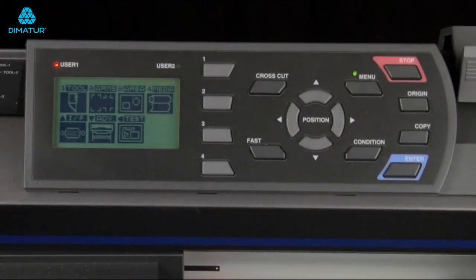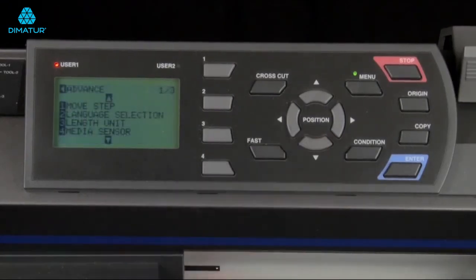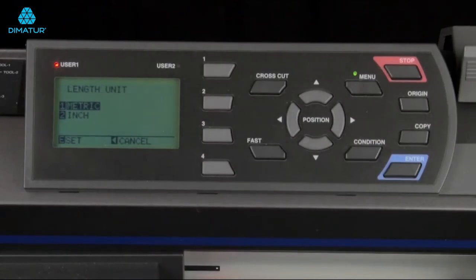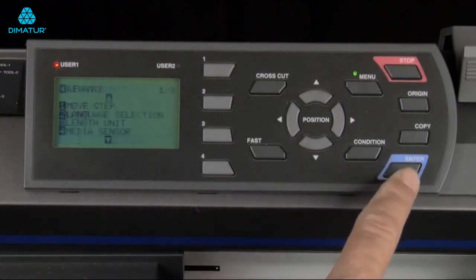This will set the cutter in a pause mode so that we can adjust some of the cutter settings. On the screen, there will be several choices. Most of these will be discussed in later lessons, but for now, let's click on the down arrow key. Press the three key for length unit. Press the two key to switch the unit of measurement to inches. And then press the enter key.